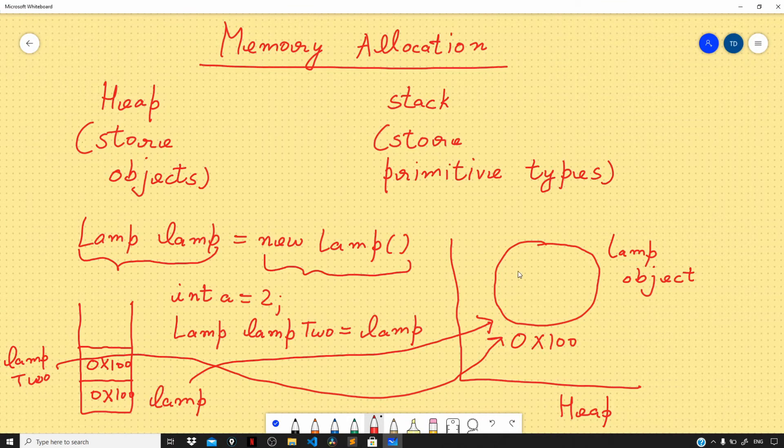Instead, we have two variables, lamp and lamp2, that are referencing the same object on the heap. Also, if we mutate the object using one of the references, say lamp2, the changes to the object will be visible through the other reference as well, which is lamp, and vice versa. This we have already discussed in the video on data types in Java. Now let's talk about deallocation of memory.